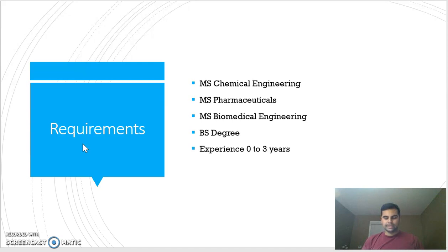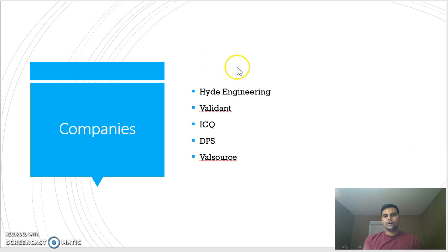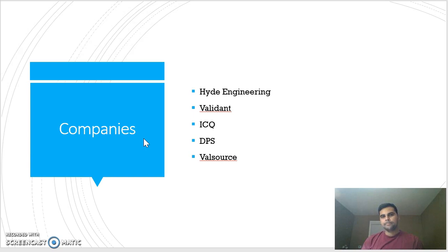The requirements to become a validation engineer include an MS in chemical engineering, MS in pharmaceuticals, MS in biomedical engineering, or even a BS degree. Experience requirements are sometimes zero to three years — you just need to find the right opportunity. I'll now go over the leading consulting companies in the market where you can find opportunities: Hide Engineering, Validant, ICQ, DPS Engineering, and WellSource, among many others.